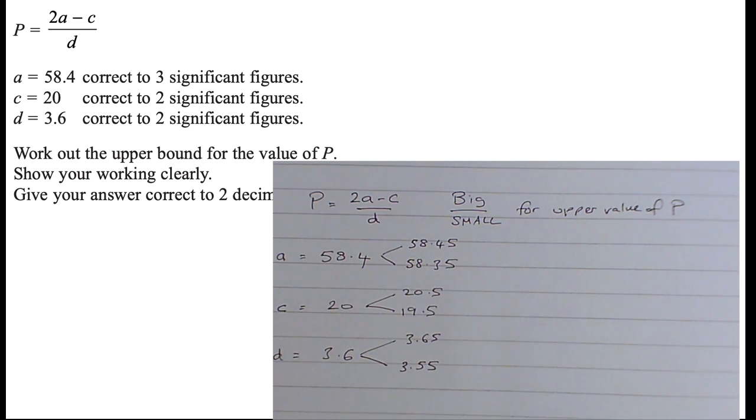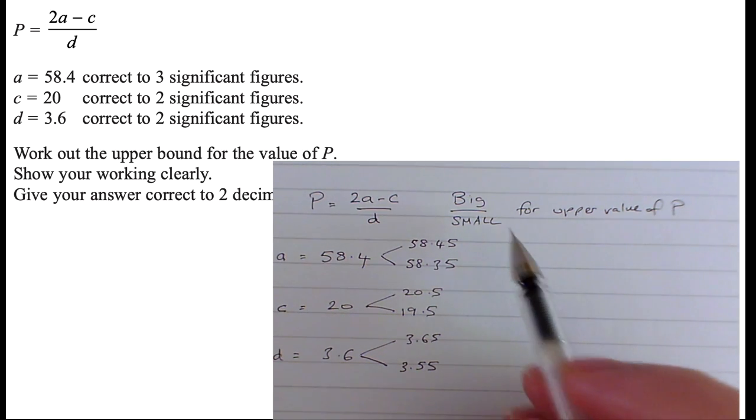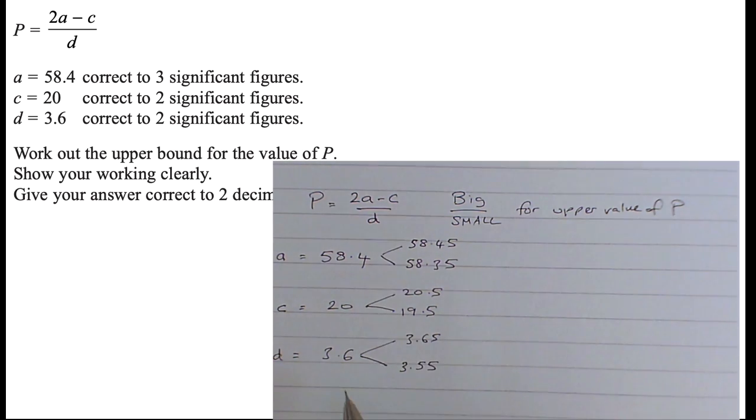So I'm looking, well, shall I deal with D first, because that's just one number, and I want it as small as possible. So we want the lower bound for D, so I'm going to write down in the denominator 3.55.